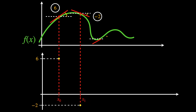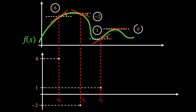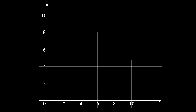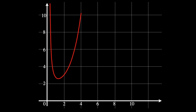So the derivative gives us a way of measuring how fast the function is changing its height. This is extremely useful. For example, let's suppose we want to calculate the limit as x tends to infinity of this function.